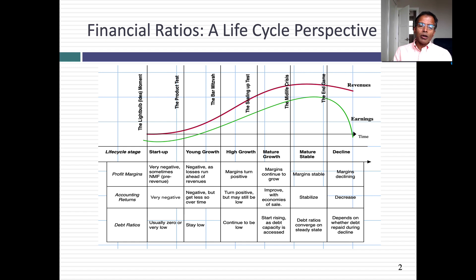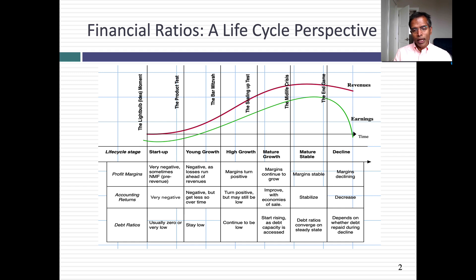When you look at debt ratios, if you're a young company, you generally should not have debt. In fact, high debt ratios of young companies are toxic — they can put the company under. But as companies mature, those debt ratios will start to show up, especially in the later stages of young growth. As companies mature, debt ratios will rise. And then in decline, if the company does the right thing, debt ratios should decline as the company goes out of business. So you should expect ratios to change over the life cycle of a company.